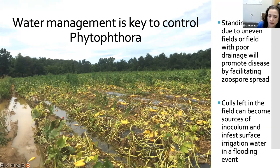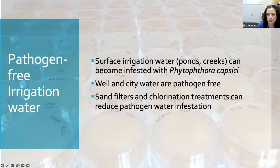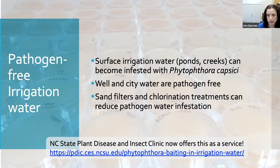Standing water is a problem, and another issue is culls. Sometimes people leave culls near surface water irrigation sources. If you use surface water — as opposed to well water or city water which are fine — that surface water can become infested with this pathogen and you effectively irrigate your field with infested water. We used to check irrigation water for some operations having issues with Phytophthora capsici to figure out if it was contaminated. There are sand filters and chlorination treatments that can effectively clean your water. Fortunately, the plant disease clinic now offers testing for surface water sources so you can determine if it's infested and whether a water treatment system is worthwhile.